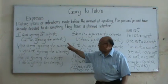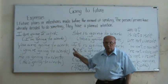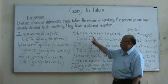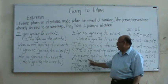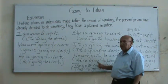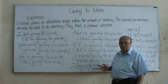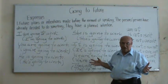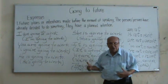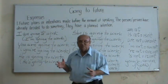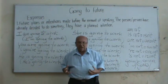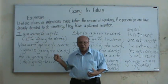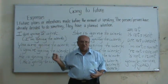Examples with 'gonna': I'm gonna work. You're gonna work. He's gonna work. She's gonna work. It's gonna work. We're gonna work. They're gonna work. Going to is very easy, but you have to conjugate the verb using am/is/are plus 'going to' plus the infinitive.